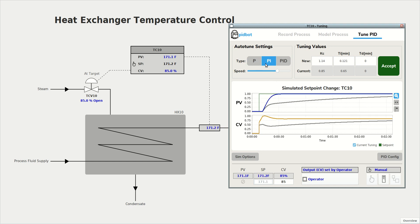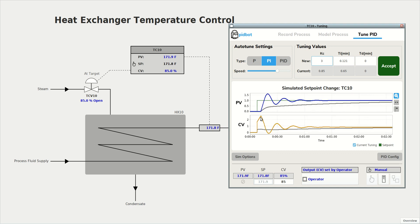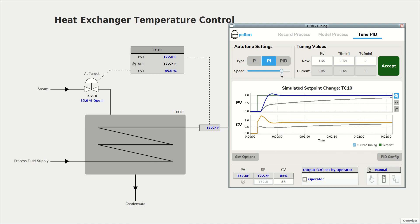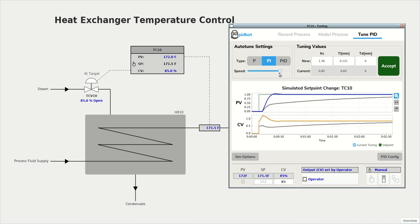In our case, we'll stick with the PI controller. But you could also manually adjust the tuning values. And PIDBOT is going to show you what that response might look like with our model process. But we'll stick with the PIDBOT suggested values. And we'll pick a point with not much overshoot. And we want to make sure that we can tolerate this much control action. And in our case, we can. So this looks great. We're going to accept those values.